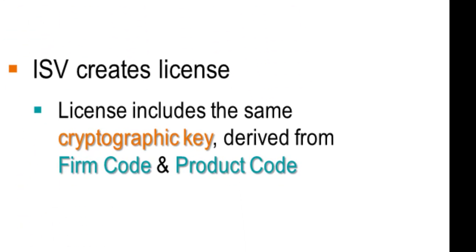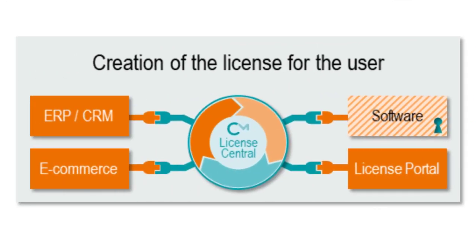In the second stage, you are going to create a license and deliver it to your end user. The license includes the same Firm Code and Product Code that you have used during the protection process. This ensures that the right cryptographic key is available on the user side for starting your software. Firm Code and Product Code are thus the vital connection between the integration of CodeMeter into your software and the creation of the protected software license.